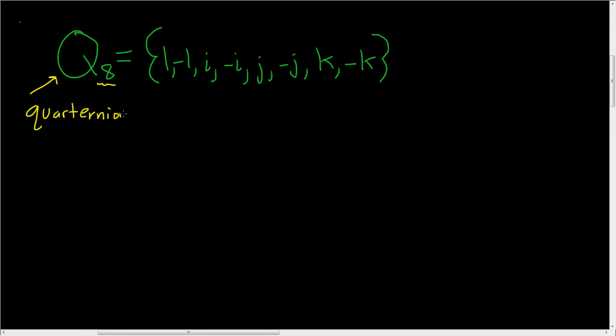So how do you multiply the elements of this group? We use a little diagram. I'm going to put an I here, and J here, and a K here. And we'll draw arrows, an arrow going from I to J, an arrow going from J to K, and an arrow going from K to I.